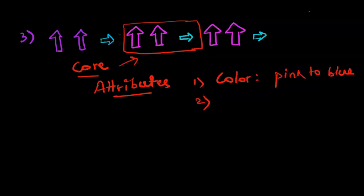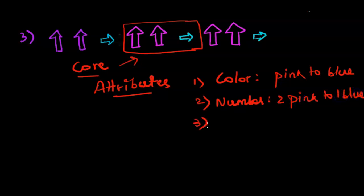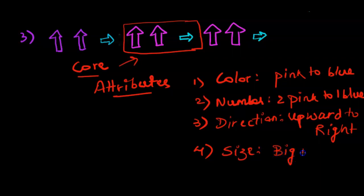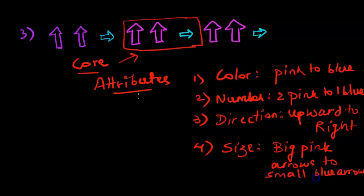The first attribute changing is color — color is changing from pink to blue. Second, is shape changing? Both are arrows, so there is no change in shape. Third, number is changing: there are two pink arrows and one blue arrow, so the number goes from two to one. Fourth, direction is also applicable here — direction is changing from upward for the pink arrows to rightward for the blue arrow. Finally, size is also changing: the pink arrows are bigger and the blue arrow is smaller. This is how we describe the core and attributes of a given pattern in the form of shapes.